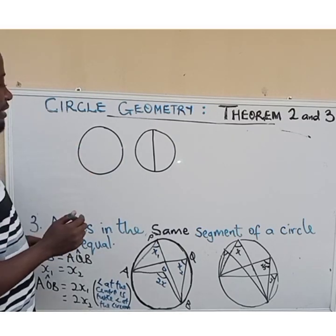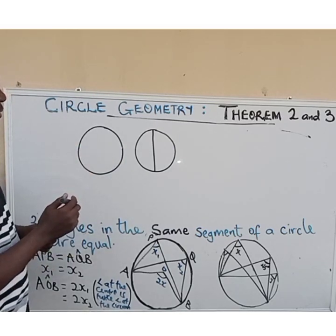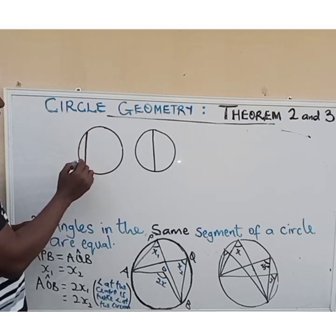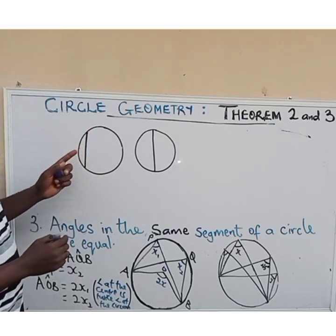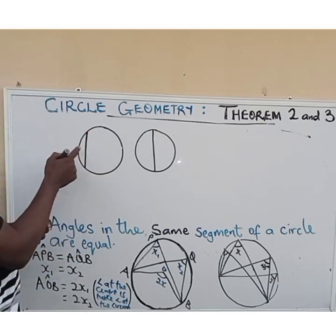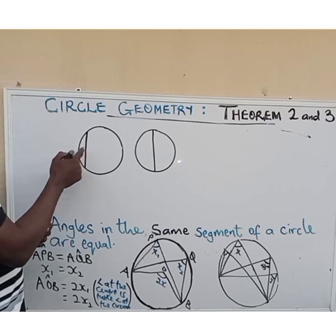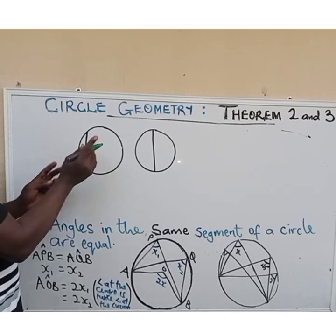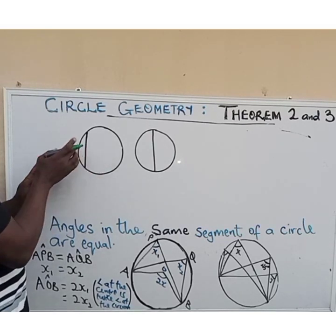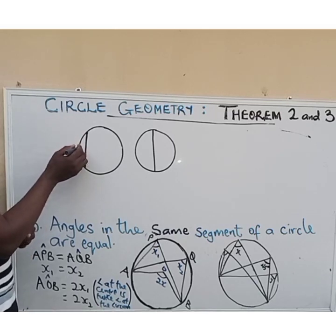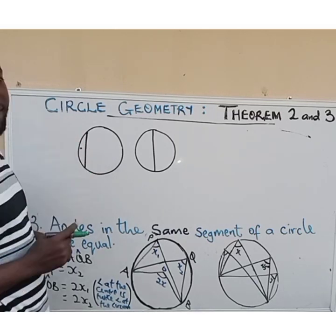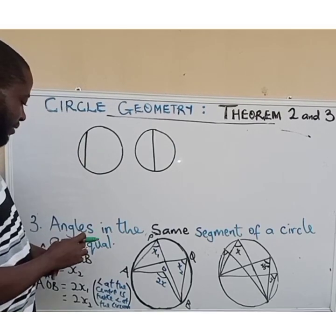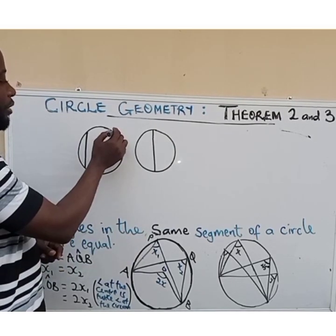There is also another line that divides the circle into two, but in this case it is the chord. This chord has divided the circle into two, but one side is bigger than the other. We call the smaller side the minor segment and the larger side the major segment.